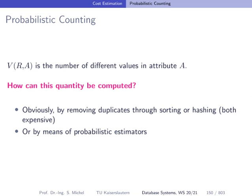Let's come back to the problem of computing V(R, A), the number of different distinct values of an attribute A in a relation R. If you want to get the distinct number of values, it means we have to remove duplicates — duplicates should not count into our counting. This can be done by sorting or hashing, but unfortunately both are quite expensive.